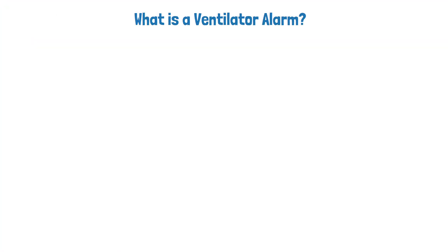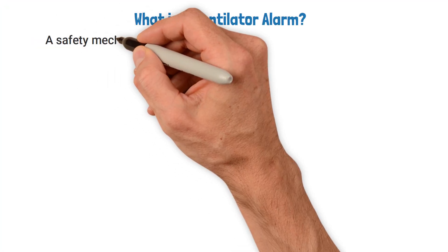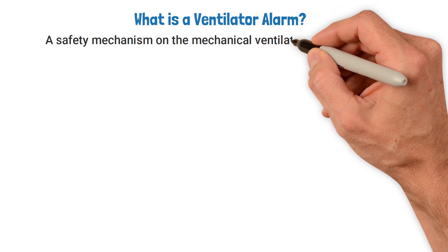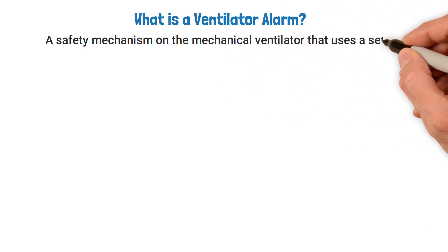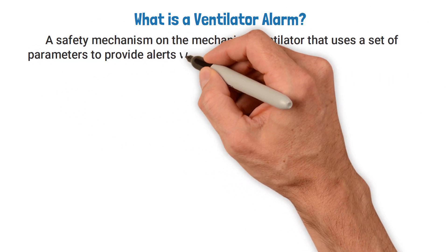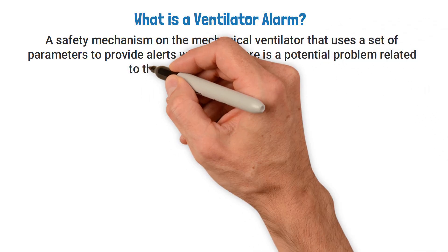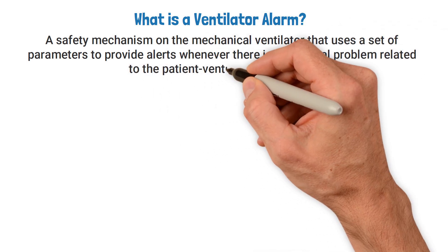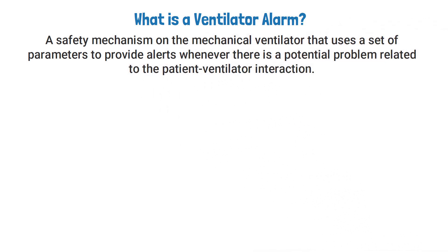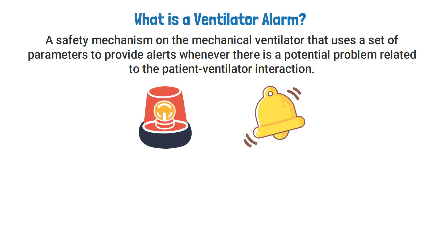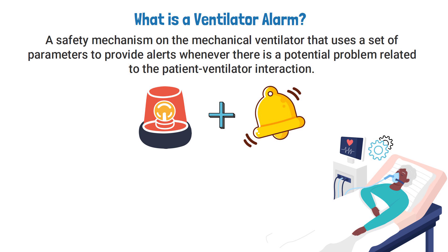A ventilator alarm is a safety mechanism on the mechanical ventilator that uses a set of parameters to provide alerts whenever there is a potential problem related to the patient-ventilator interaction. The alarms can be visual, audible, or both depending on the ventilator setting and the patient's condition.